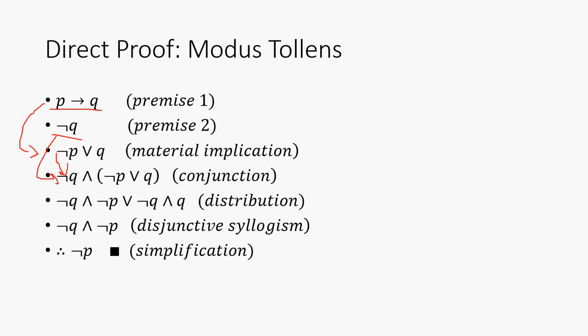Then we just use the distribution law to distribute it out. And then we use a disjunctive syllogism to get rid of this OR right here. We have not Q and not P. And then we use our simplification law to eliminate this guy right here, so we get not P which is what we wanted to show.